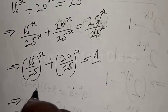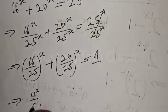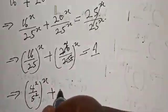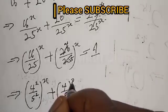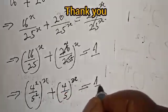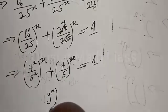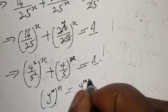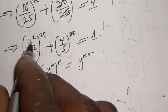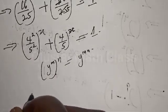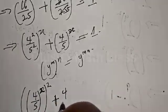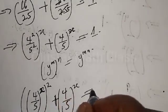This can be expressed as 16 over 25, all raised to power x, plus 20 over 25, all raised to power x, equal to 1. Now, 16 over 25 can be written as 4 squared over 5 squared, and 20 over 25 as 4 over 5. Note that if you have y to the power m, all to the power n, it is the same as y to the power mn. Therefore, we have 4 over 5, all to the power x, all squared, plus 4 over 5, all to the power x, equal to 1.